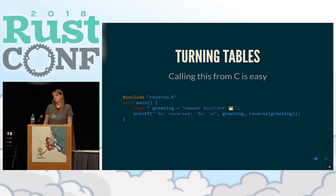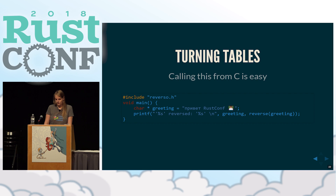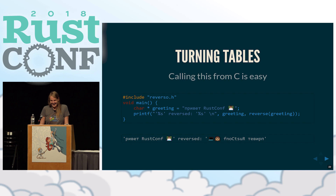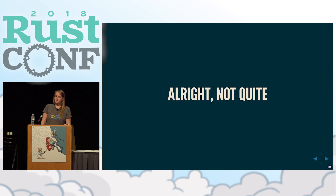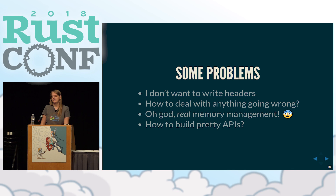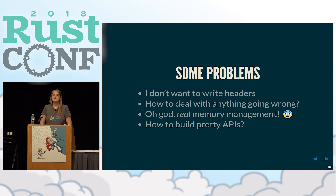Calling this from C is then actually pretty simple. We include the reverso header, use a very Unicode greeting, and then call our Rust code to reverse it. But I see some problems here. The first is that I'm notoriously lazy and I don't want to write headers - and not just because I'm lazy, but because if you have a header in your repo that's out of date from your library, you get weird linking errors. Then you find out there's a merge conflict from three weeks ago because someone pushed a button too quickly on GitHub. The other thing is this was a very optimistic function - it returns a string, and what could possibly go wrong?